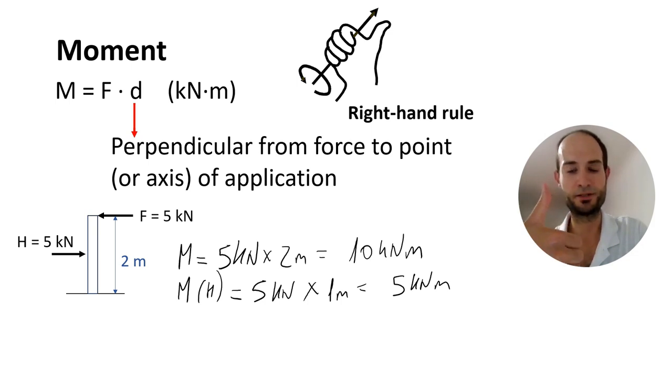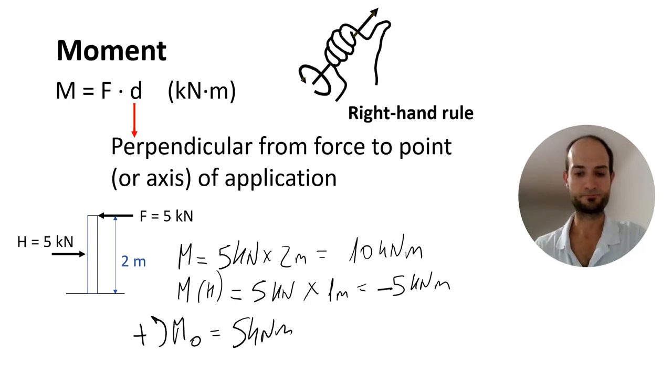The direction of the moment is always perpendicular to the surface that the force and the distance are creating. In this case, for F, we will have the thumb going towards us out of the paper. And that's going to be positive, because it's anticlockwise. Later, in 3D, you will understand very well why it's positive. For F is going to be positive, for H we are getting clockwise, so that's going to be negative. The moment for H is going to be negative. And therefore, the total moment in O is going to be a positive 5 kN meter. And to avoid confusion, always good idea to put here the signs.